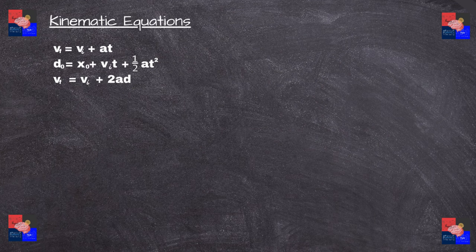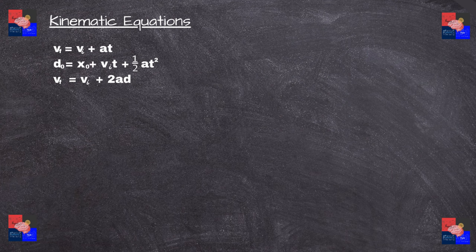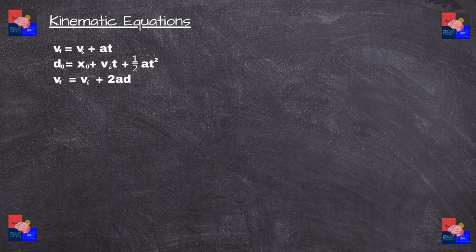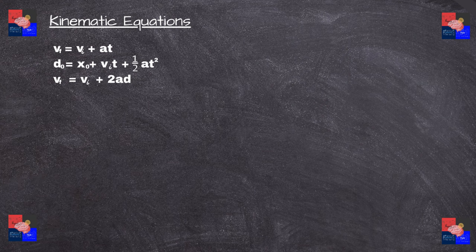Now that we've got those variables out of the way, here are the kinematic equations that we can use. As you can see, all these equations have at least one variable missing, which is important for some questions and circumstances.